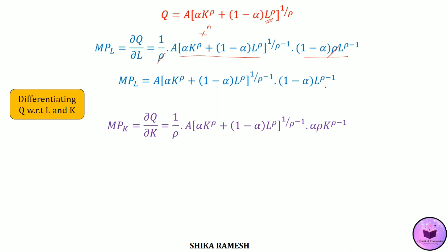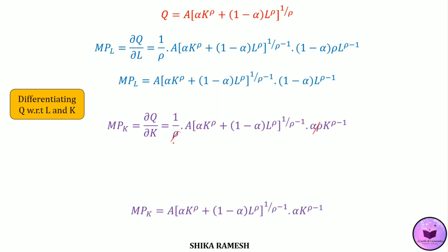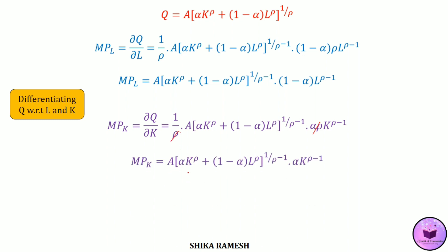Similarly, we find the marginal productivity of capital. Del q by del k equals 1 by rho multiplied by a times alpha k raised to rho plus 1 minus alpha l raised to rho, the whole raised to 1 by rho minus 1, multiplied by alpha rho k raised to rho minus 1. Here also rho and rho cancel out, giving MPK equal to that same bracketed expression raised to 1 by rho minus 1, multiplied by alpha k raised to rho minus 1.